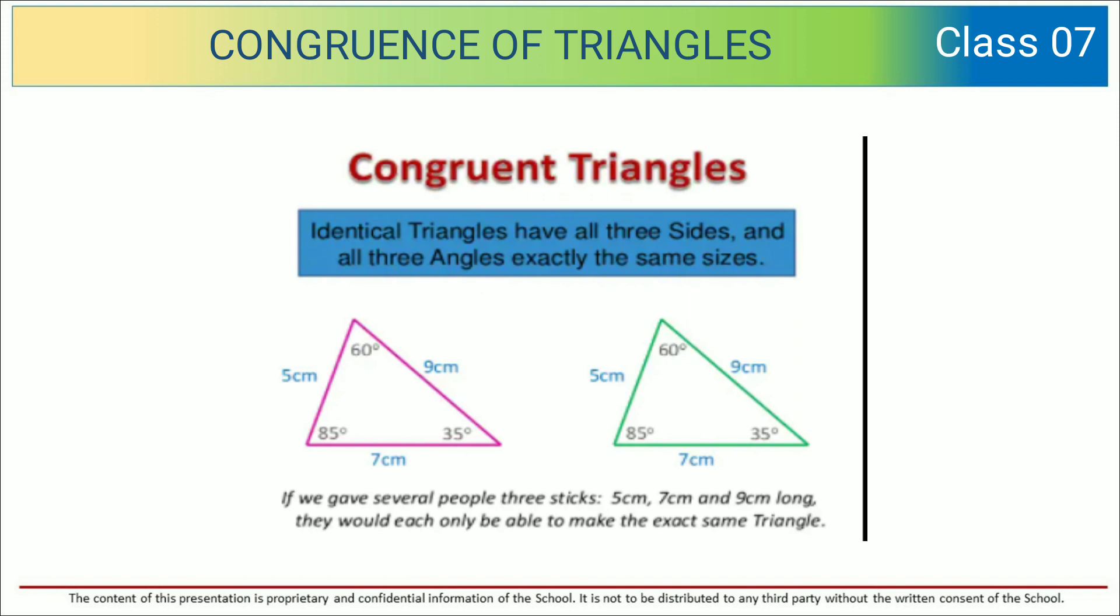So here you can see 60 degrees, 80 degrees, 35 degrees in the pink triangle, and the green triangle also has the measure 60 degrees, 85 degrees, and 35 degrees. And the sides if you see, five centimeters, seven centimeters, and nine centimeters in the next one also you can see it is five centimeters, seven centimeters, and nine centimeters.